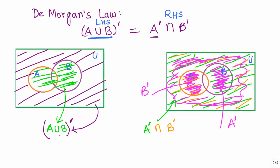Intuitively, we have proved that A union B complement is equal to A complement intersection B complement — or in words: the complement of the union of two sets is equal to the intersection of the individual complements.